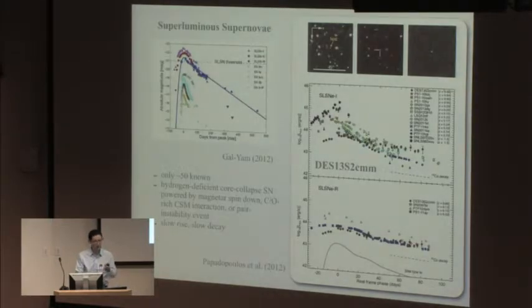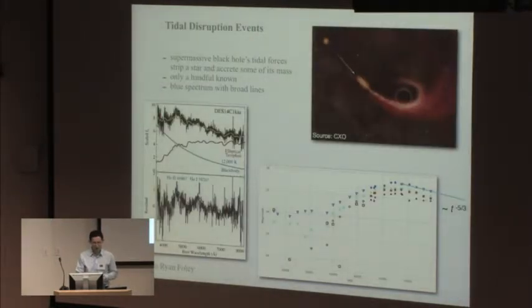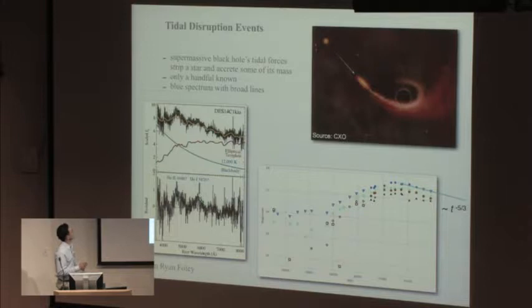Superluminous supernovae are another thing that we find. Tidal disruption events - Fritz talked about this. We also found one recently. This corresponds to a star that just happens to pass by a supermassive black hole. The tidal forces strip the star apart. Some of the mass gets accreted, and the accretion generates light.